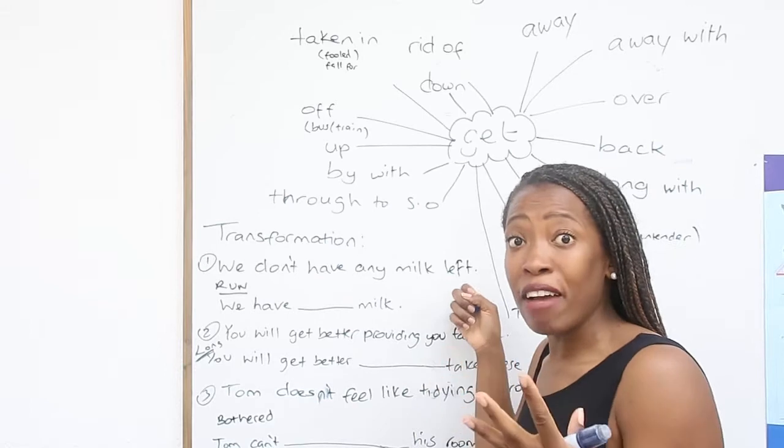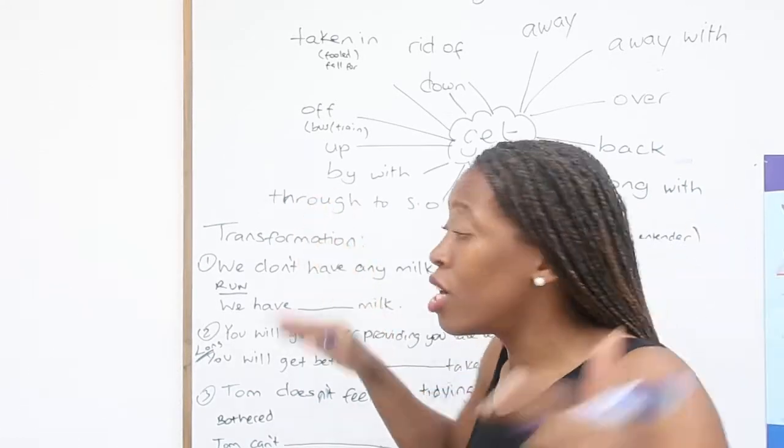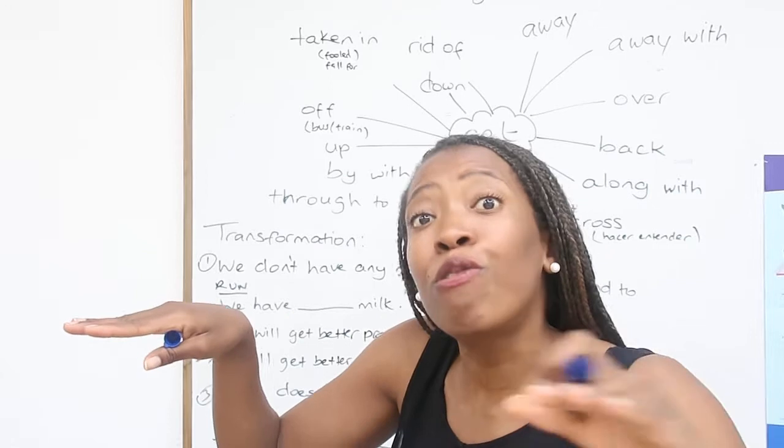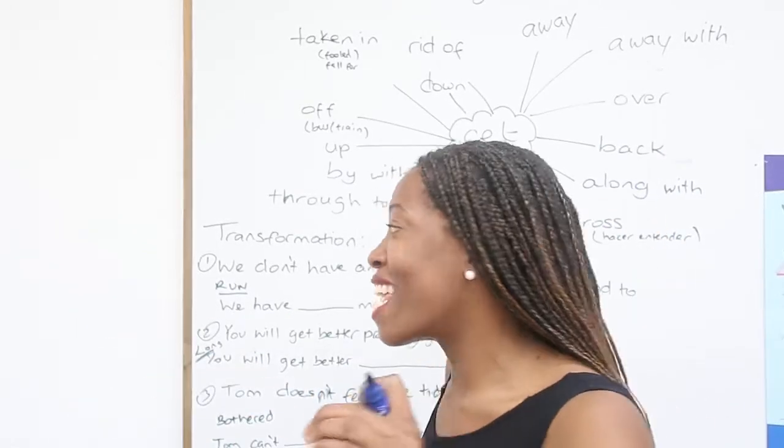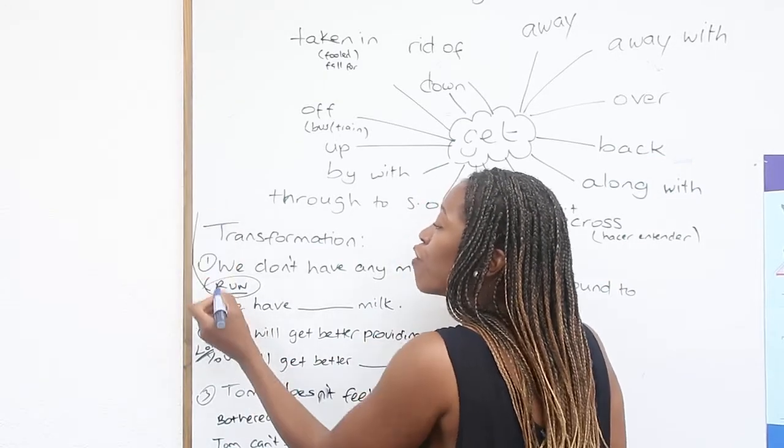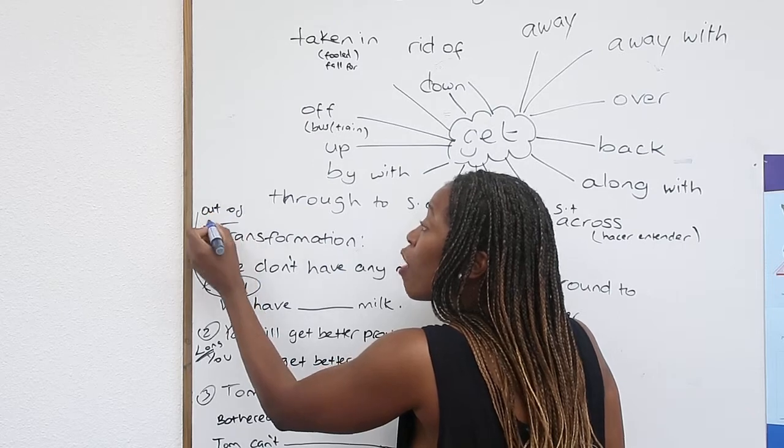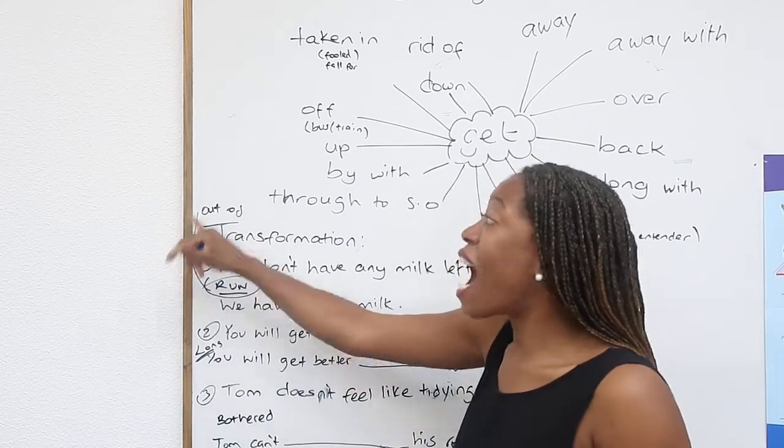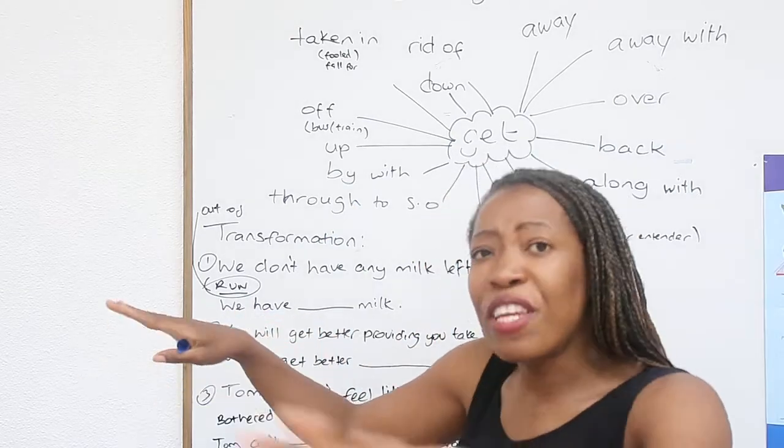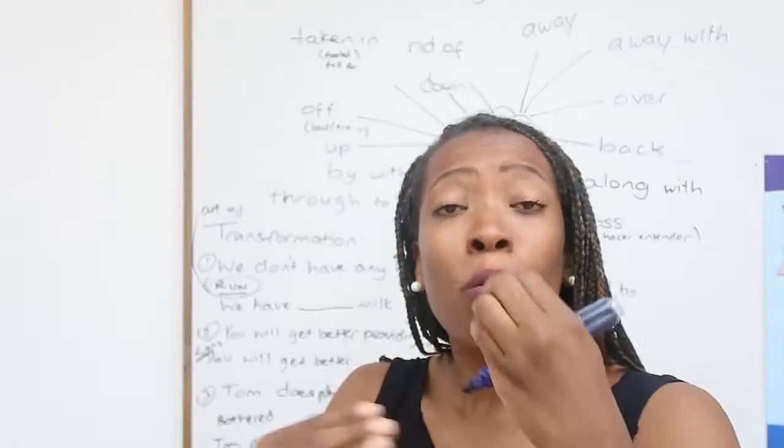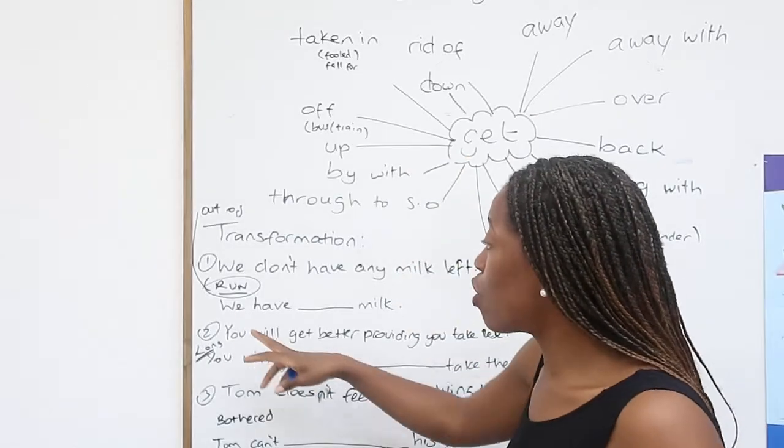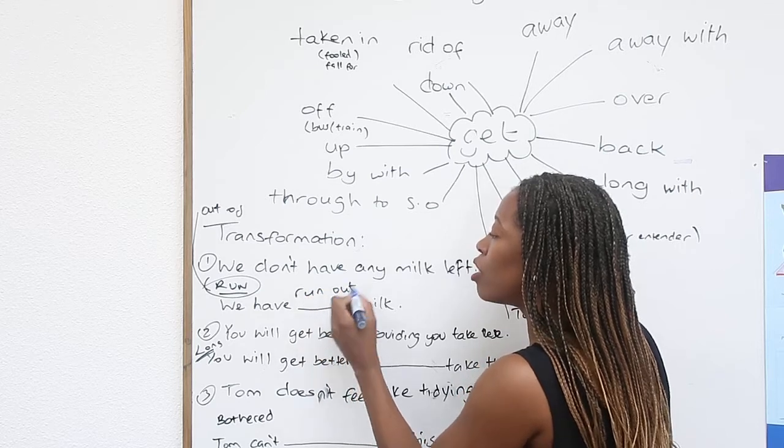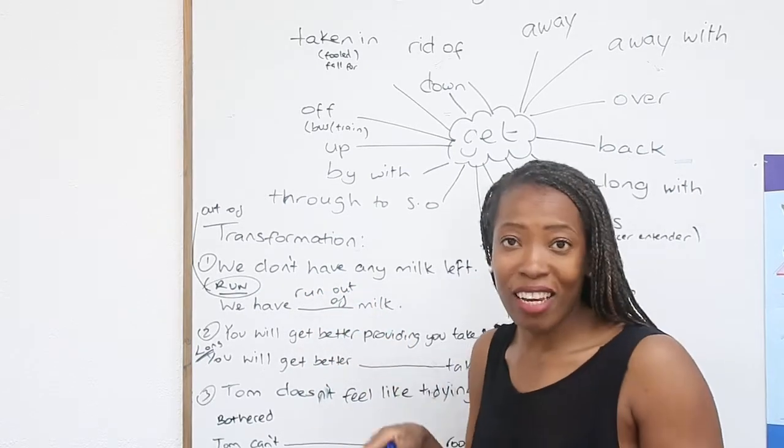So phrasal verbs are a must. We should dedicate time for these. We look at the first sentence: We don't have any milk left. When you don't have something, you've run out of something is what we say. Run out of something means that there is no more left. If I say to you I've run out of money, it means I have no money left. We have run out of milk.